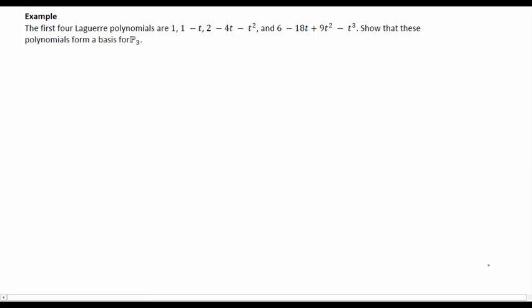So the first four Laguerre polynomials are given here. So these are just special polynomials. They have a name. In particular, they solve a differential equation. We want to show that these polynomials form a basis. So I need to show that they're linearly independent and that they span.